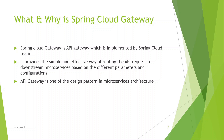Spring Cloud Gateway is an API gateway implemented by the Spring Cloud team. It provides a simple and effective way of routing API requests to downstream microservices based on different parameters and configurations. One more thing — API gateway is one of the design patterns in microservice architecture.